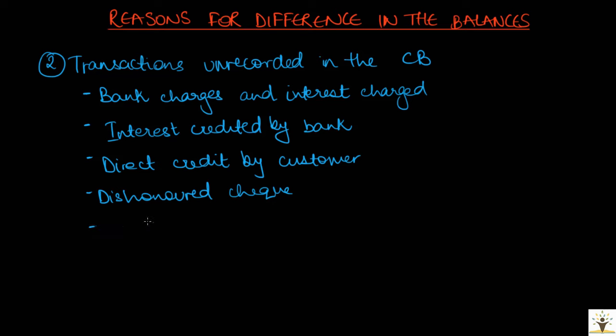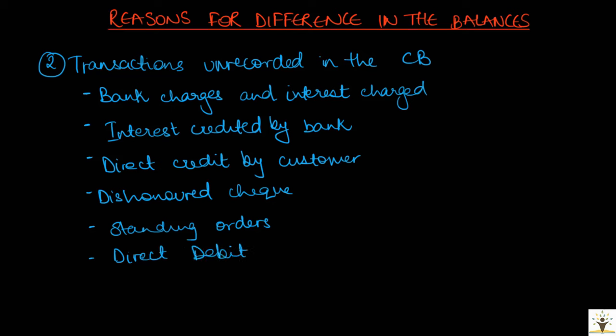There are also standing orders, where banks are given instructions to pay fixed amounts at fixed periodic intervals from the bank account. These are not recorded in the cashbook due to the lack of a supporting document — for example, monthly loan installments or rent payments. Lastly, there are direct debits, where the bank is instructed to pay periodic bills on behalf of the business by directly debiting the bank account without written authorization before each payment, for example monthly utility bills. All these transactions are found in the bank statement but remain unrecorded in the cashbook.